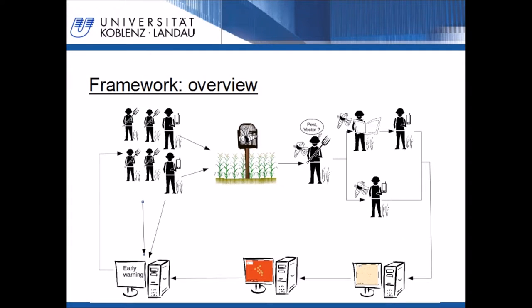But what do we need for the described approach? We need a working IT infrastructure, e.g. with available mobile internet connection or at least with a working cell phone network. Also, mobile devices are needed, best with a high-resolution camera. We also need low-cost insect traps as well as species identification software or manual comparative identification help. We also need a spatial and temporal geodatabase as well as insect distribution models and warning and response models.